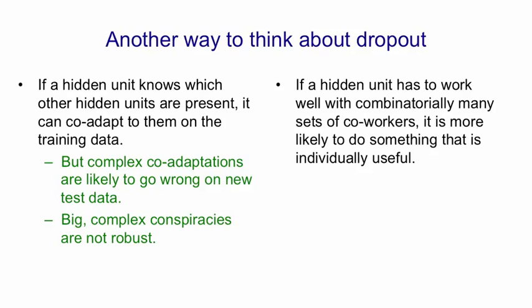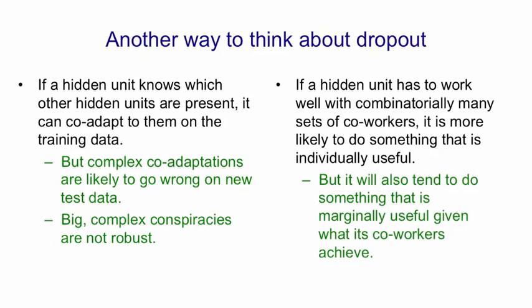So by using dropout, we force a hidden unit to work with combinatorially many other sets of hidden units. And that makes it much more likely to do something that's individually useful rather than only useful because of the way particular other hidden units are collaborating with it. But it's also going to tend to do something that's individually useful and is different from what other hidden units do. It needs to do something that's marginally useful given what its co-workers tend to achieve. And I think this is what's giving nets with dropout their very good performance.